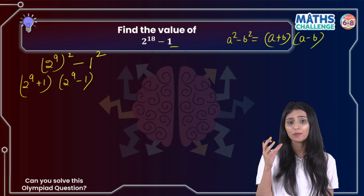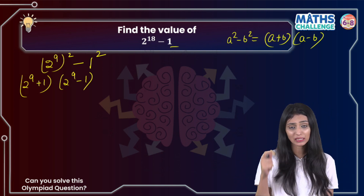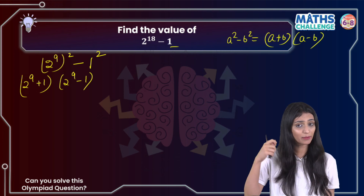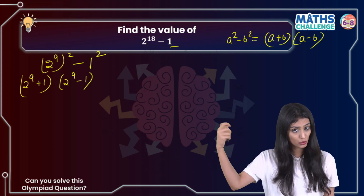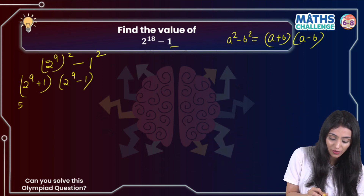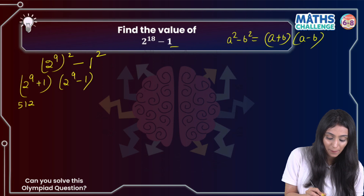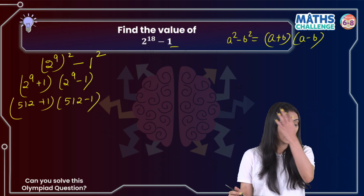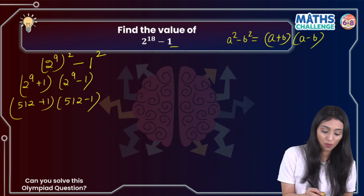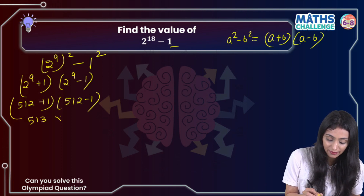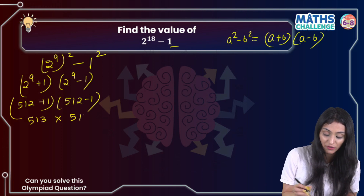Now, 2 to the power 9 — if you multiply 2 nine times, you will get 512. So we have 512 plus 1 and 512 minus 1, which gives us 513 and 511.